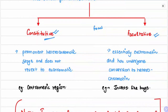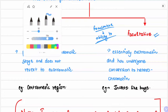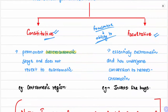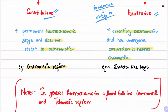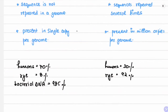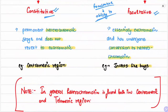Heterochromatin is of two types: constitutive and facultative. Constitutive heterochromatin is permanently heterochromatic and does not revert to euchromatin — the example is the centromeric region. Facultative heterochromatin has the ability to become heterochromatic; these are essentially euchromatin that have undergone conversion to a heterochromatic state — an example is found in insects like bugs.